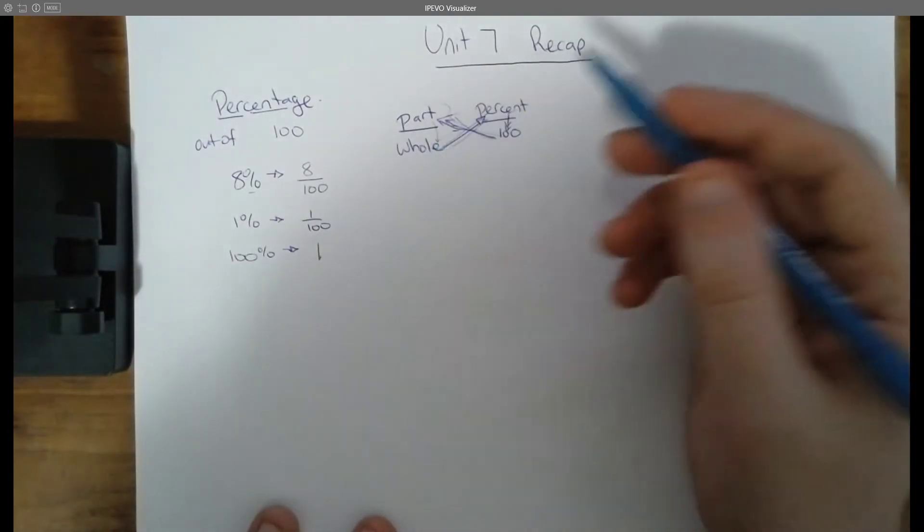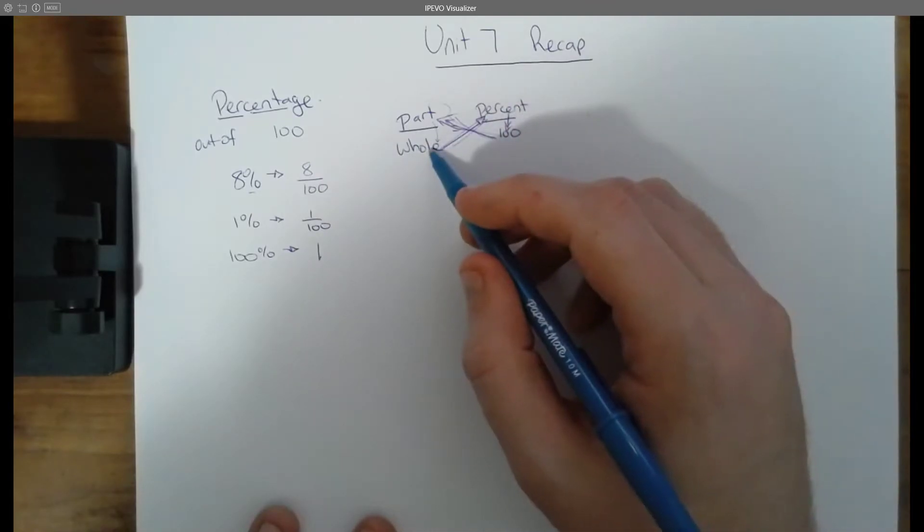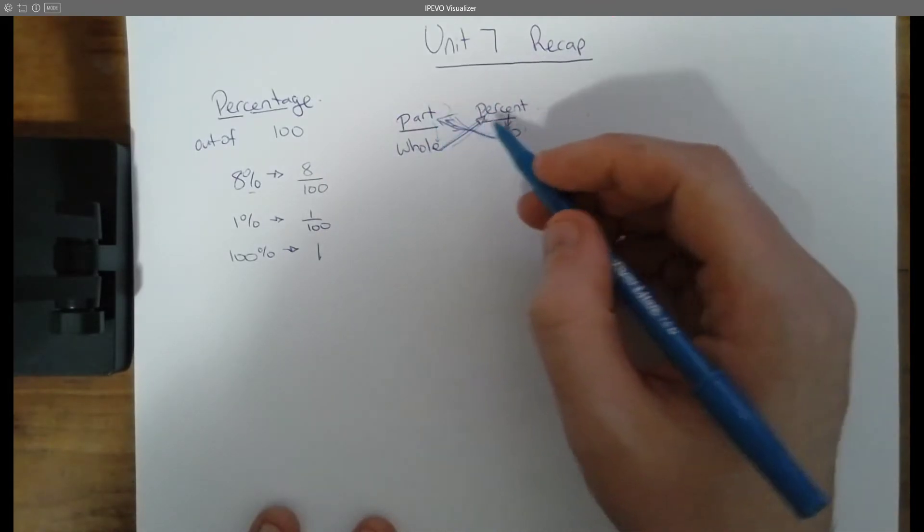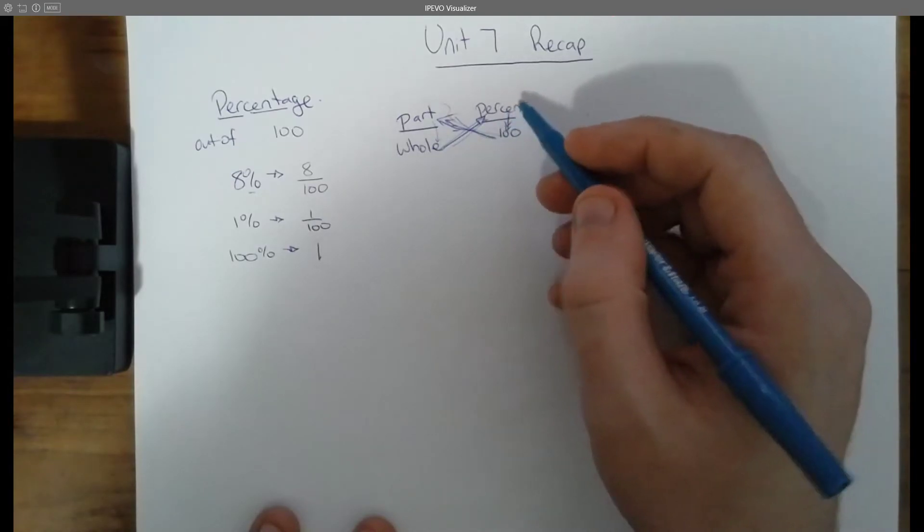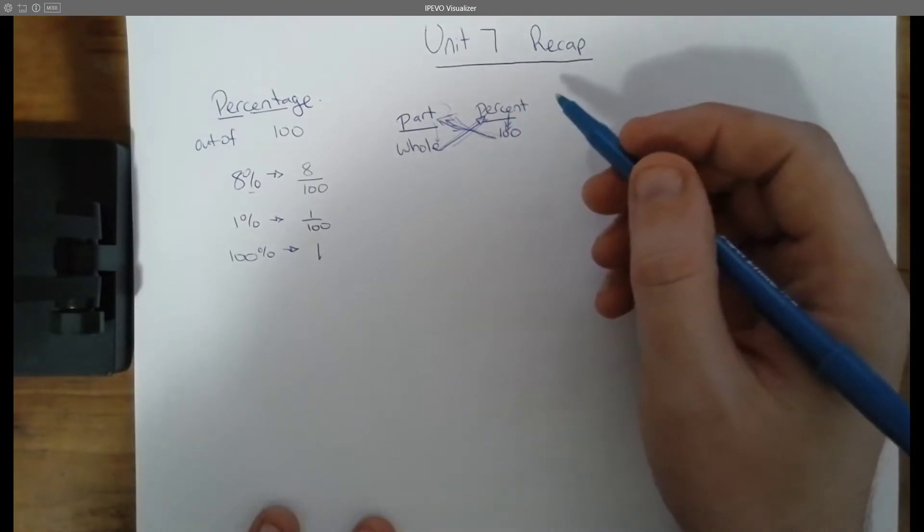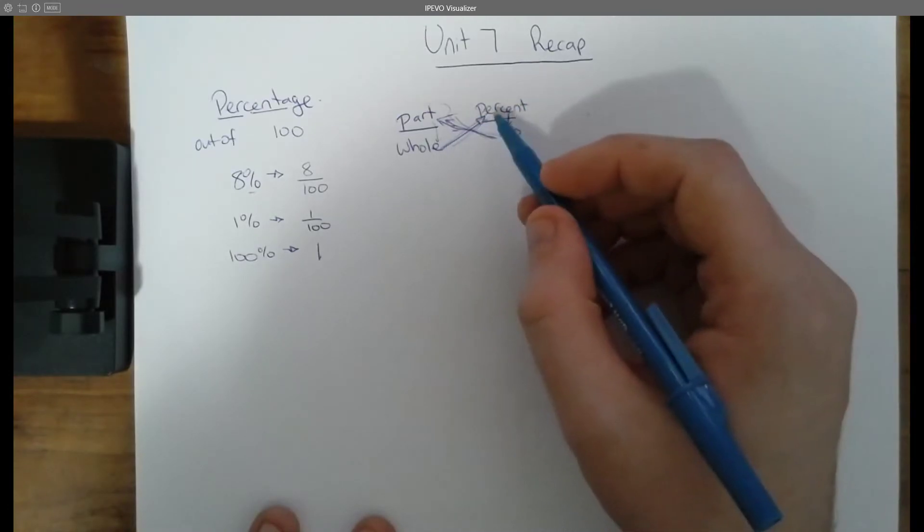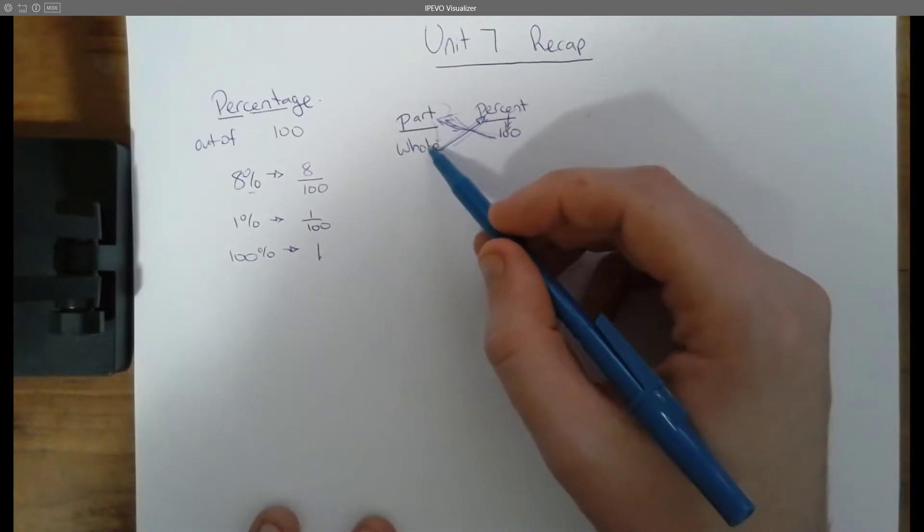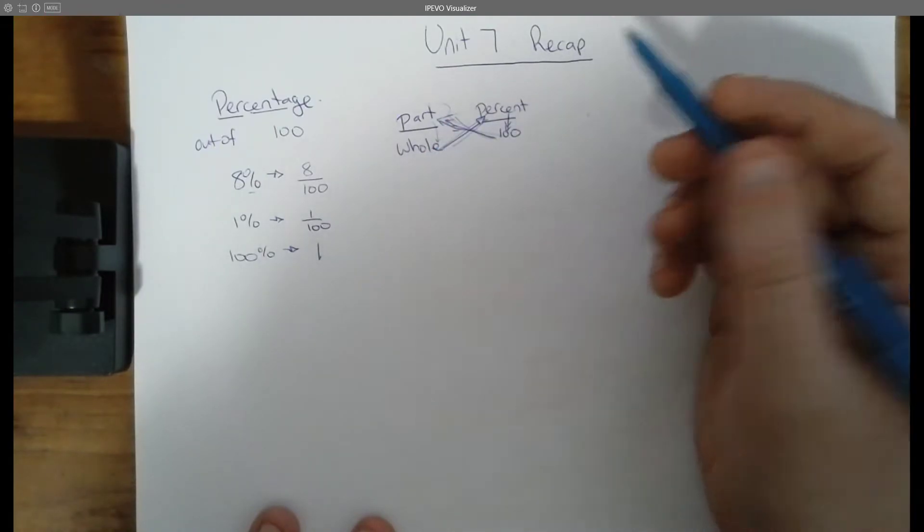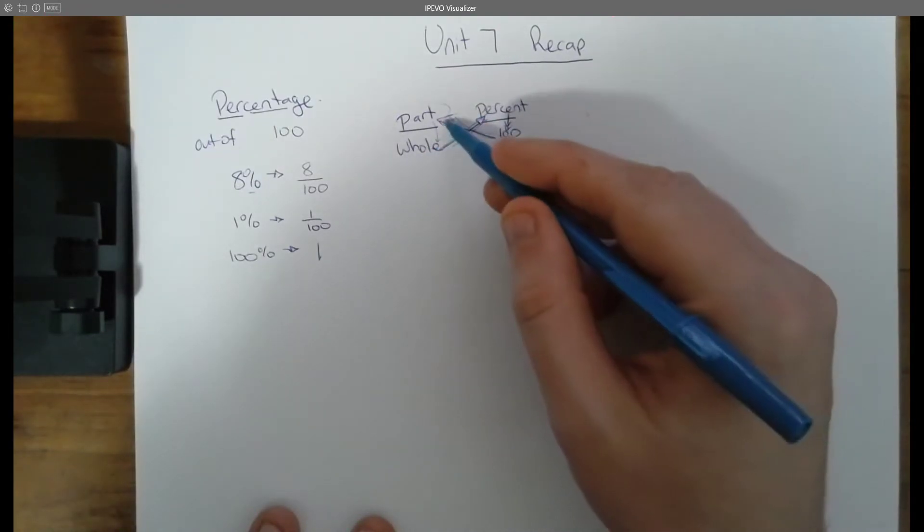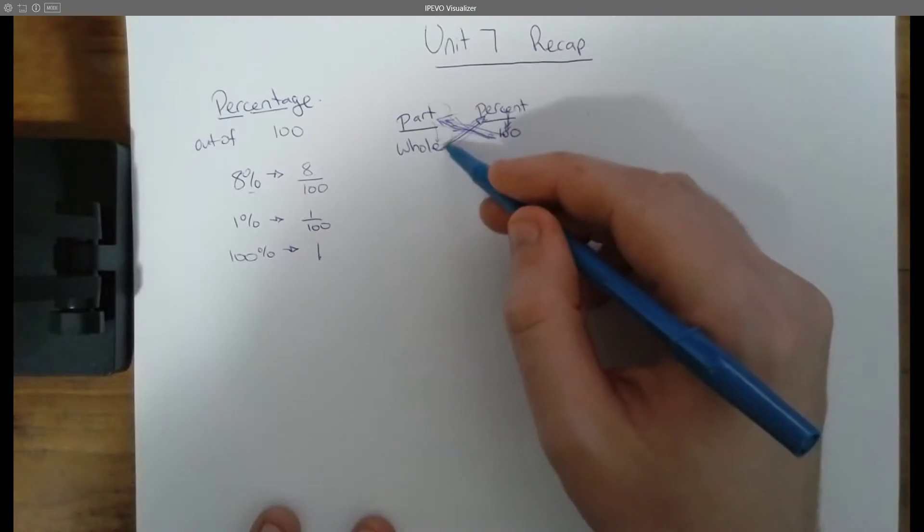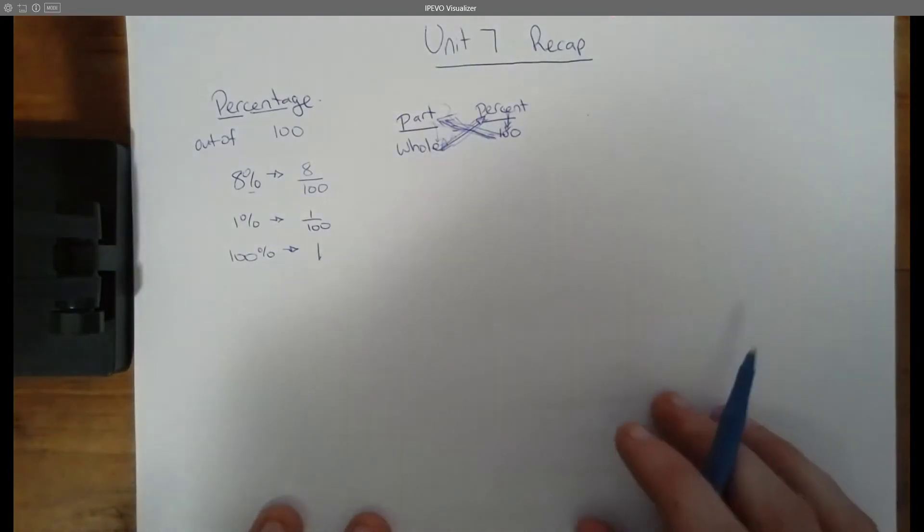Some of you might be saying, okay, but what happens if I'm missing something else in this equation? Can I rearrange? And certainly you can. So some of you might be saying, yeah, what happens if I'm missing whole? Well, we just simply go the other way. So we do part, we go across to 100 times 100 divided by percent equals whole. So we can kind of mix this up however we want.